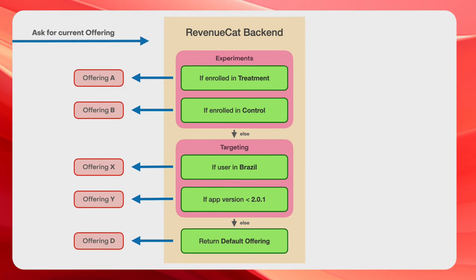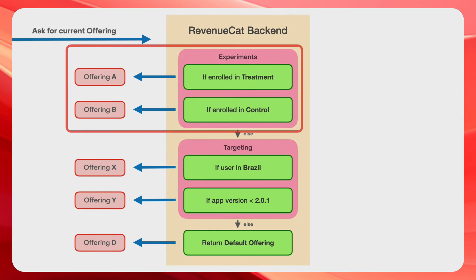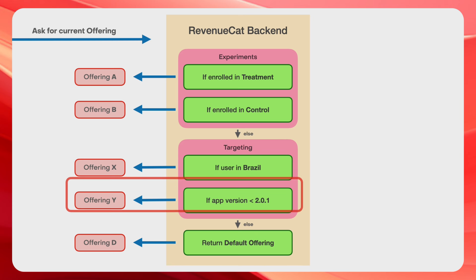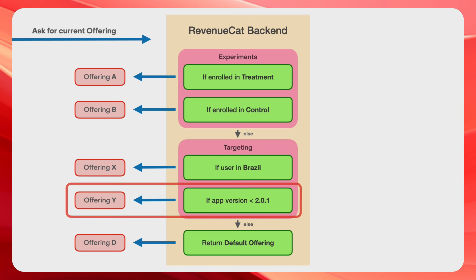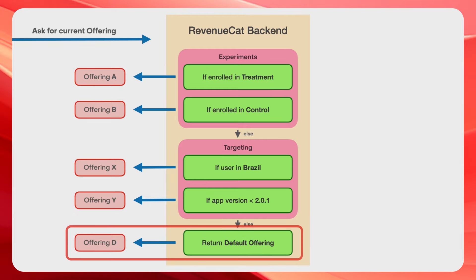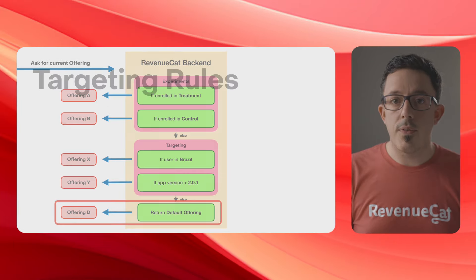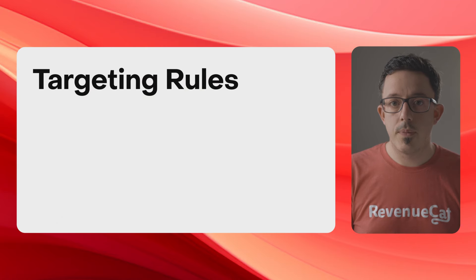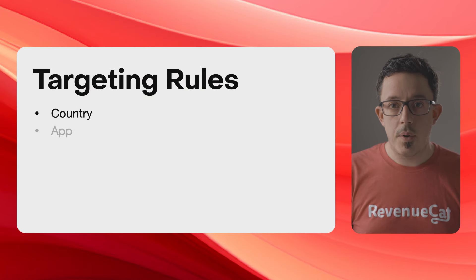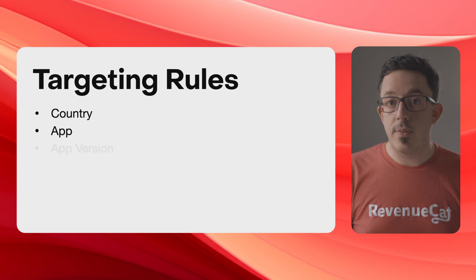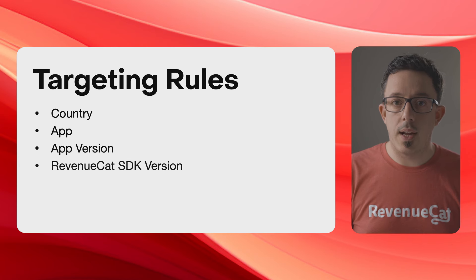First, it will check if the user is enrolled in any experiments. Then, it will run through the rules you've configured, in order, and if there's a match, it will return the configured offering. If it gets through all the rules without finding a match, it will return the default offering. We launched Targeting last year with four initial rules: Country, App — for example iOS or Android — App Version, and RevenueCat SDK version.